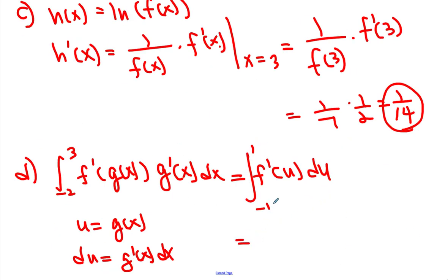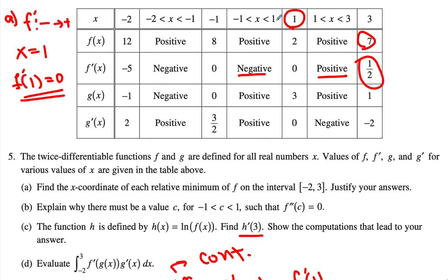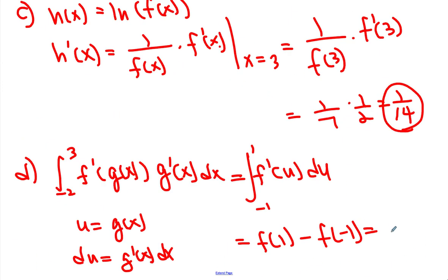So by the Fundamental Theorem of Calculus, you know that this one is in fact equal to f of 1 minus f of negative 1. f of 1 equals 2 and f of negative 1 equals 8. So we get 2 minus 8, which becomes negative 6. That becomes our final answer.